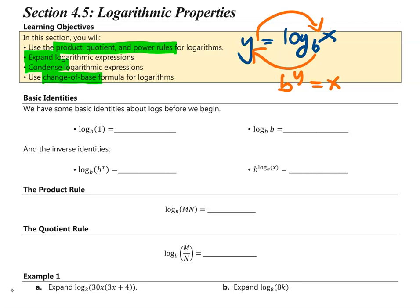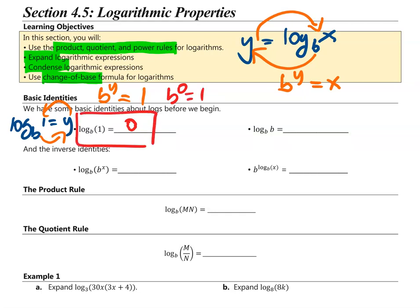Some basic identities. Log base b of 1 is equal to 0. Think about log base b of 1 equals y — rewriting in exponential form gives b raised to y equals 1. The value of y is 0, because any number raised to 0 is equal to 1. So, log base b of 1 is equal to 0.